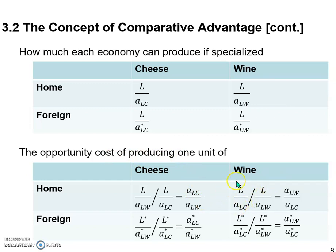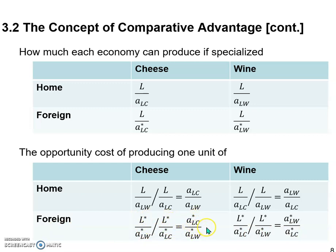For wine, we use the amount of cheese the economy can produce with all its labor divided by the amount of wine it can produce with all its labor. Again L cancels out, and ALW over ALC is the opportunity cost of producing one gallon of wine. You may notice these two fractions are reciprocals of each other — the opportunity costs of cheese and wine, multiplied together, equal one. For the foreign economy it's very similar; the only difference is you put stars on every variable.